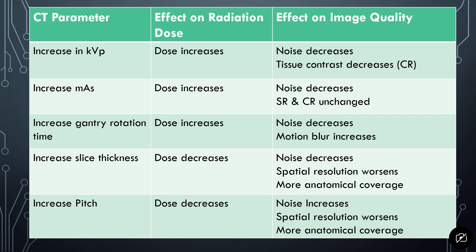You can only go as small as your smallest detector element, but you can add detector elements together to make thicker slices. If you increase your slice thickness, your dose will decrease and your noise will also decrease. Your spatial resolution, though, will worsen because spatial resolution is dependent on the size of the slice. If you're doubling or tripling the thickness of your slice, you decrease your ability to see fine detail. You do have more anatomic coverage, covering a larger area of the body.